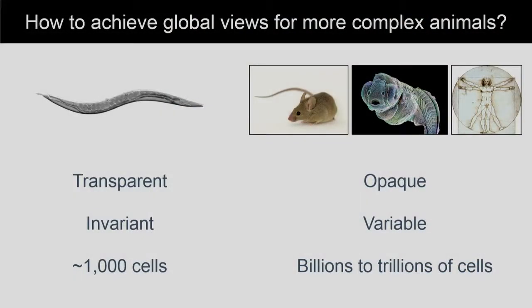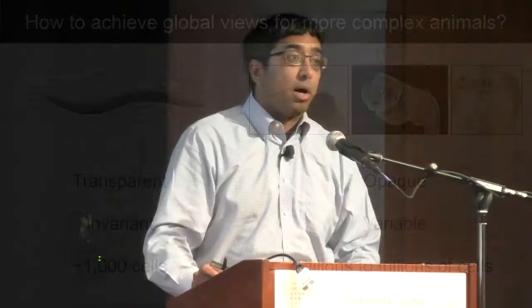Despite considerable effort and a really incredible range of creative methods — including some developed by people here in this room like Chris Walsh — we still lack a global view of cell lineage for other organisms, including our favorite models. The challenges are several: the lack of transparency relative to C. elegans, the fact that development is variable from individual to individual whereas C. elegans is extremely stereotyped, and a challenge of scale — roughly a thousand cells in C. elegans versus billions to trillions in the models we care most about.